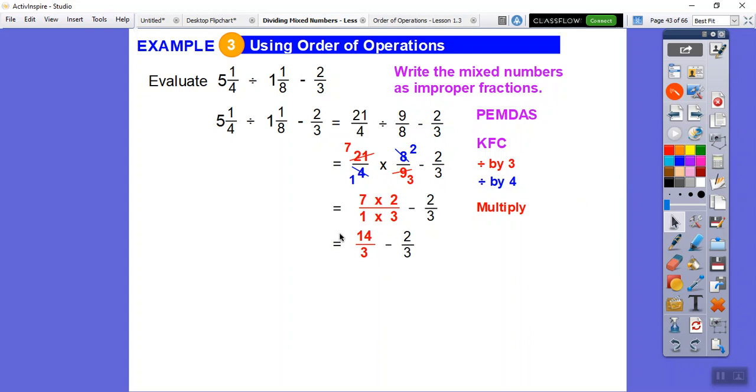So we have 14 thirds minus 2 thirds. We have common denominators. So we just subtract 14 minus 2 is 12. So 12 thirds. And then 3 goes into 12 four times. So the answer is 4.